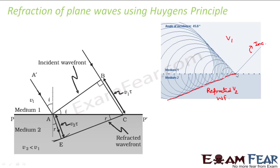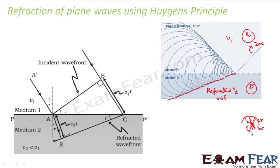These secondary waves will have velocity, and the radius of the circle formed — for waves which originate in medium 1, they will have v1 times tau, and the waves which originate in medium 2 will have a smaller velocity because this is the denser medium and that is the rarer medium. Velocity in a denser medium is lesser than in a rarer medium. Therefore, this will be v2 times tau, and this will not be an exact circle — the wave front will not be an exact circle.